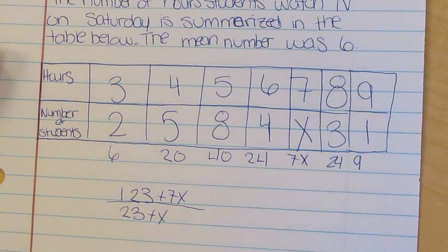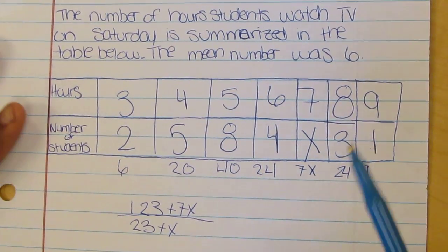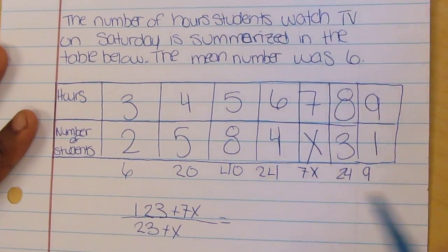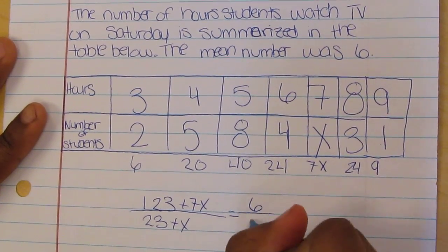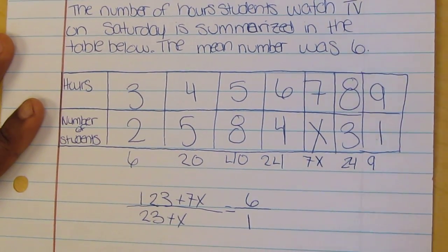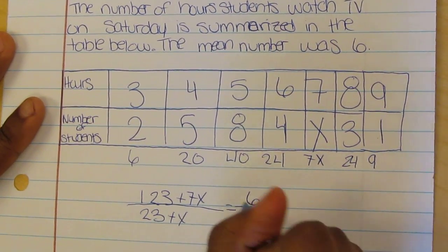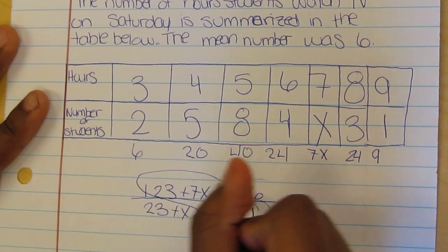Then you have to put 6 at the top since it's the mean, and you put 1 as the bottom number. Then you have to cross multiply these.